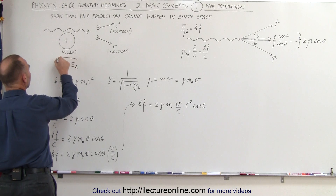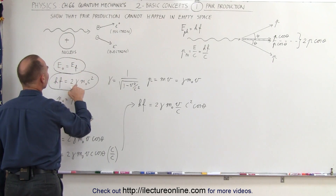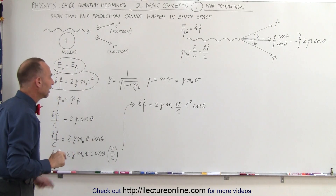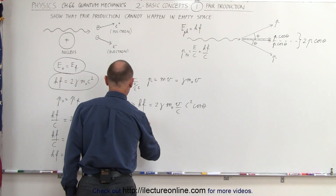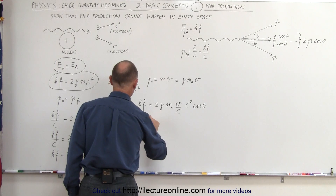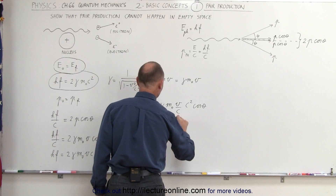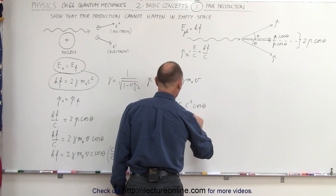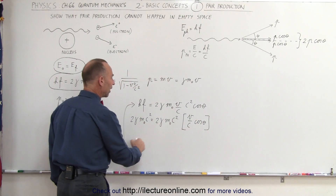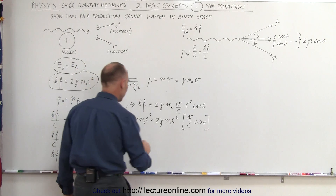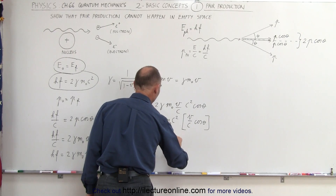Going back to energy conservation, hf must equal 2 times gamma times the rest mass times c squared. If we replace hf in the momentum equation with this quantity, we get: 2 times gamma times the rest mass times c squared equals 2 times gamma times the rest mass times c squared times v over c times the cosine of theta. Notice this same quantity appears on both sides, so we can divide both sides by it. That means 1 must equal v over c times the cosine of theta.